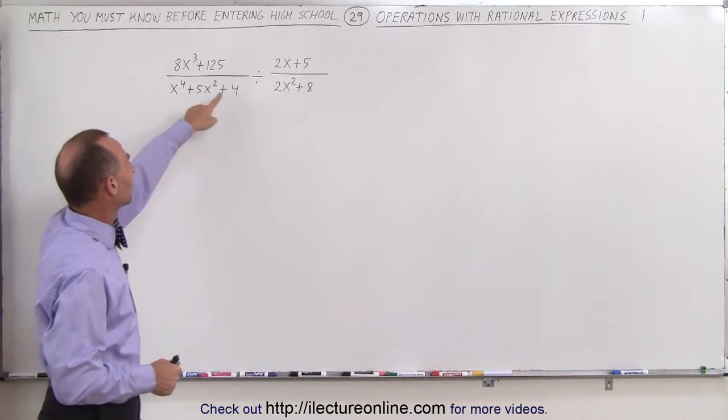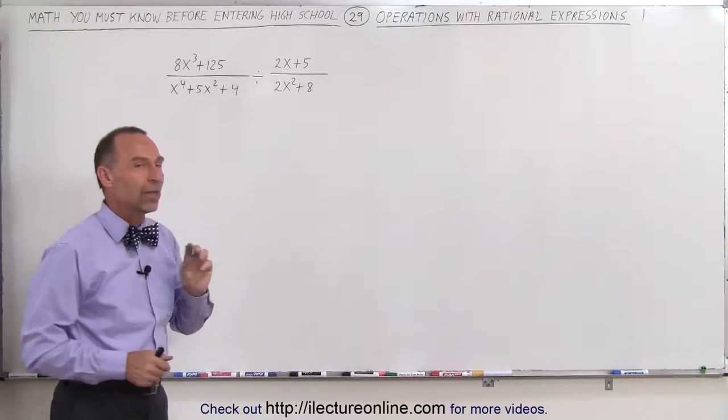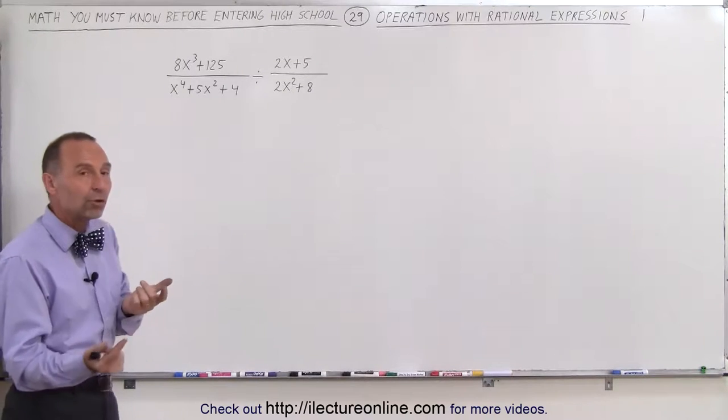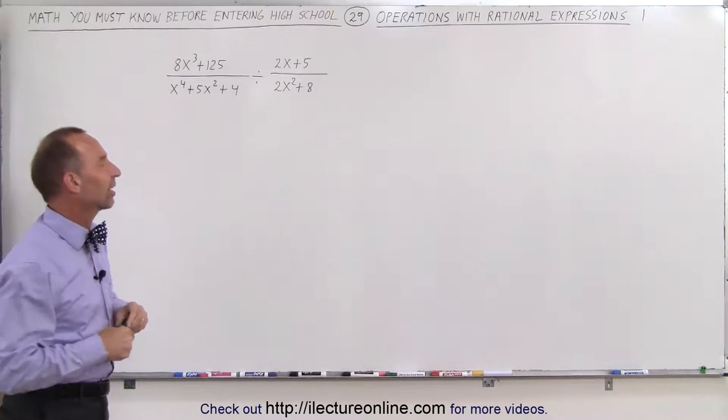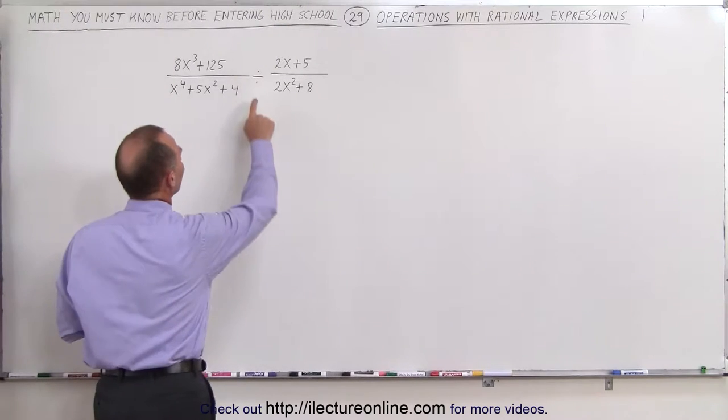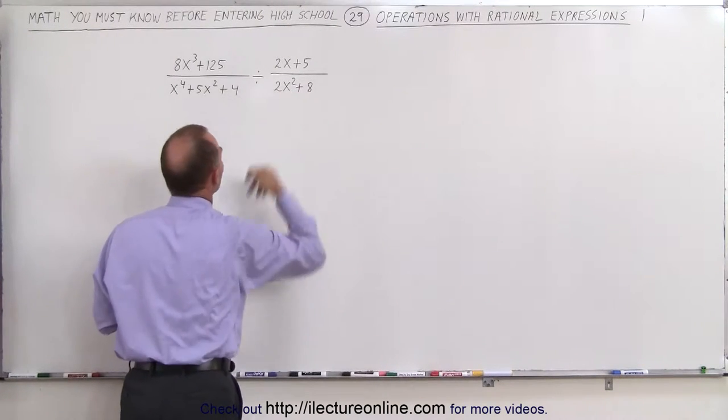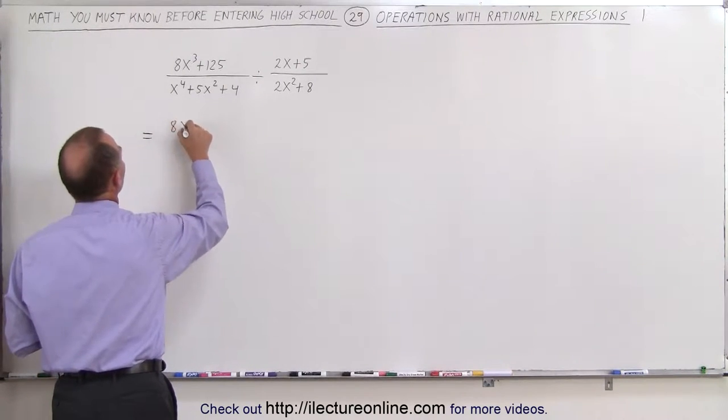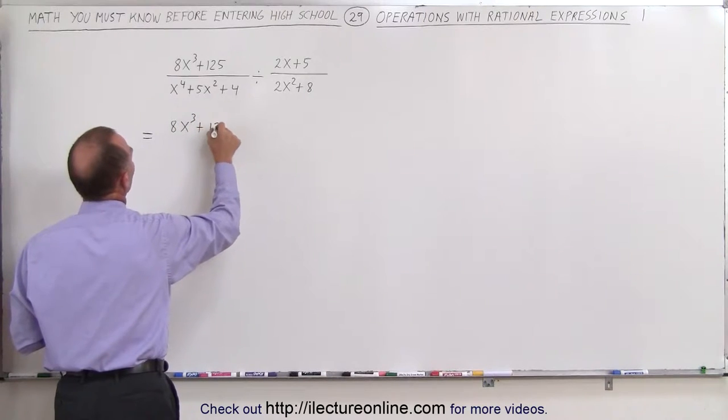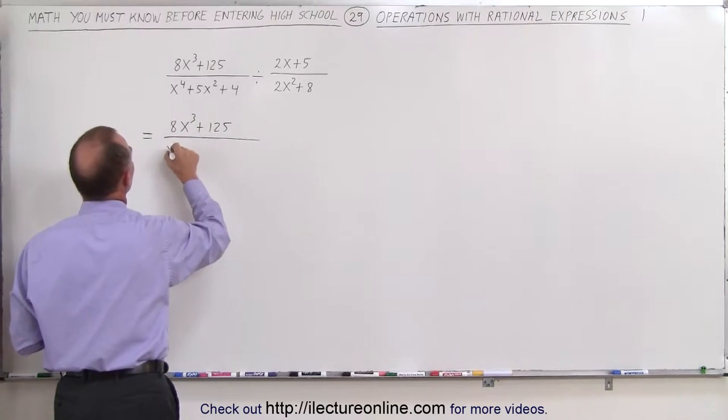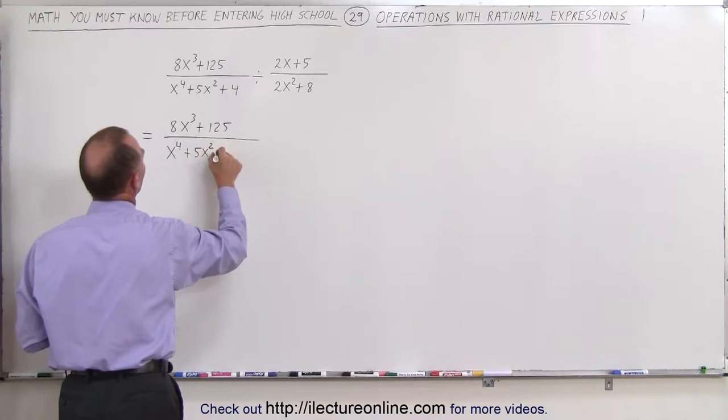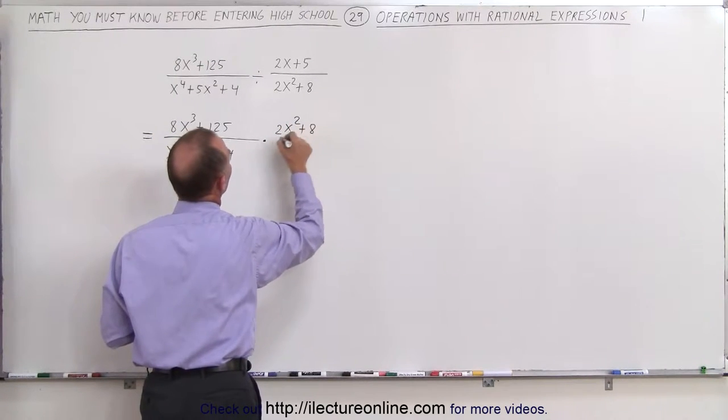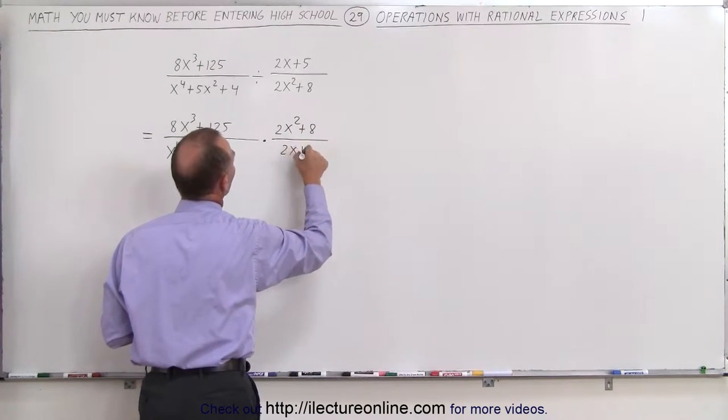And here we have this divided by this. Now, the first thing you should always do is when we have a rational expression divided by another rational expression, turn that into multiplication by inverting that second rational expression. So instead of dividing by this, we're going to multiply by its inverse. So that's the first thing we always do. Change the division into multiplication. So this is now 8x cubed plus 125 divided by x to the fourth plus 5x squared plus 4 multiplied by the inverse of this, which is now 2x squared plus 8 divided by 2x plus 5.